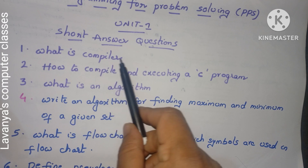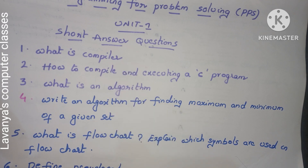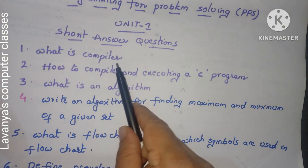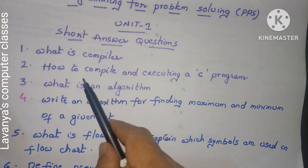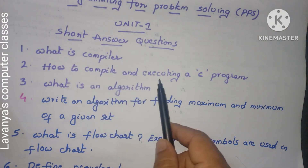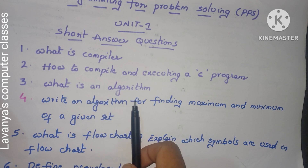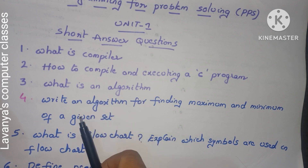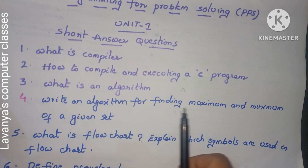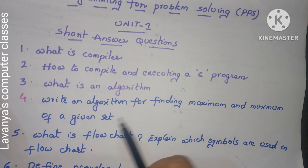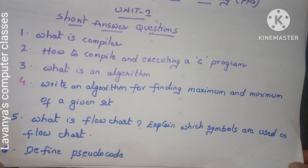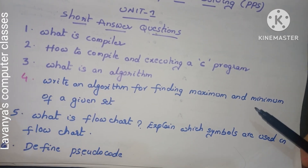The first question is: what is a compiler? Because it is everything about the introduction to computers. Second one is: how to compile and execute a C program? Third: what is an algorithm? Fourth: write an algorithm for finding the maximum and minimum of a given set. According to the syllabus they have mentioned so many algorithms, and this is one of them.